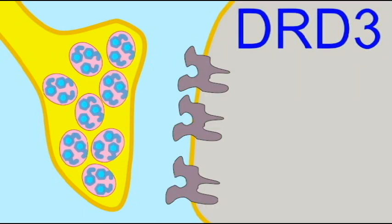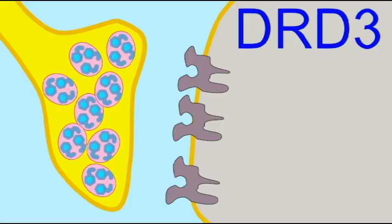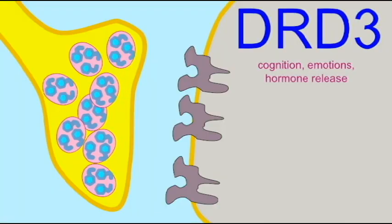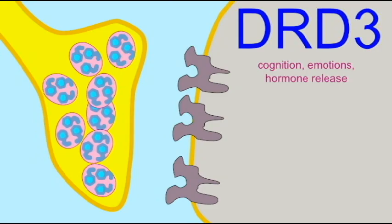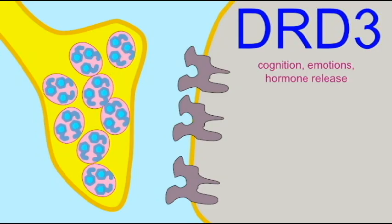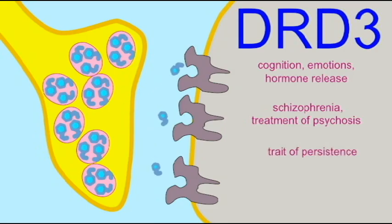DRD3 receptors are expressed in the limbic system and are involved in cognition, emotions, and hormone release. A number of studies have linked variation in DRD3 receptors to schizophrenia. Polymorphisms of both DRD3 and DRD4 have been observed in individuals with avoidant and obsessive personality traits. Variations in this gene also seem to affect the normal personality trait of persistence.